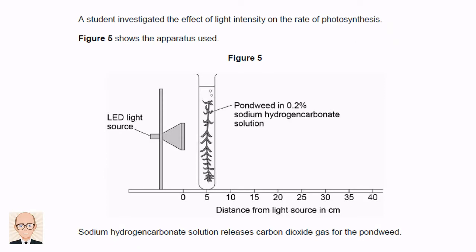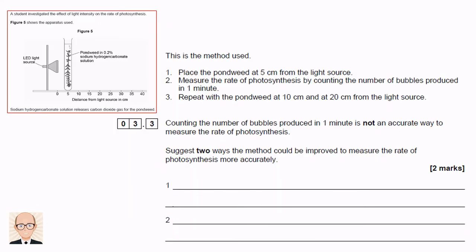This next question introduces an investigation into the effect of light intensity on the rate of photosynthesis. The apparatus is shown in the diagram here. So we have a tube of pondweed in sodium hydrogen carbonate solution, 5cm away from a light source. The sodium hydrogen carbonate solution provides carbon dioxide to the plant. The rate of photosynthesis can be estimated by counting the bubbles of oxygen produced in one minute. The procedure is repeated with the tube at different distances from the lamp.